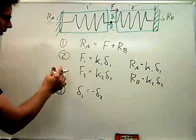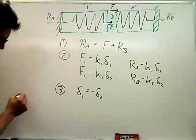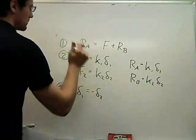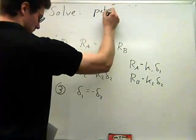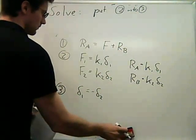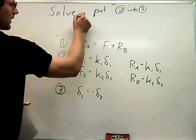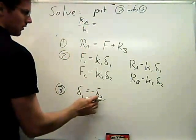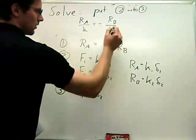So I can solve this, and I'll solve it by taking equations two and inserting them into equation three, so let me do that up top so you can see it. So when I put equation two into equation three, I find that RA over K1 has to be equal to negative delta 2, which is RB over K2.